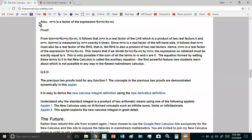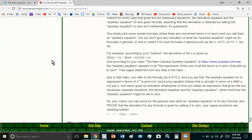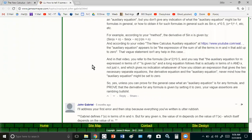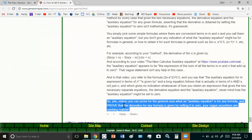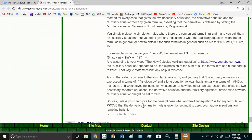Now on the site of James R. Mayer, I've actually shown you that this guy's an absolute moron and doesn't know what he's talking about. If you look at the comments on his website you'll see that he's a bit of a numbskull. But the statement I'm going to focus on is this: unless you can prove for the general case what an auxiliary equation is for any formula and prove that the derivative for any formula is given by setting it to zero, your vague assertions are rambling bullshit.